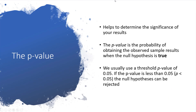The p-value helps us determine whether our results are statistically significant. It is the probability of obtaining the observed sample results when the null hypothesis is true — essentially, how likely are our observed results if the null hypothesis was true, that there was nothing going on. In the social sciences and many health sciences we tend to use a cutoff of 0.05. If the p-value is 0.05 or less, we can reject the null hypothesis and say something is statistically significant.